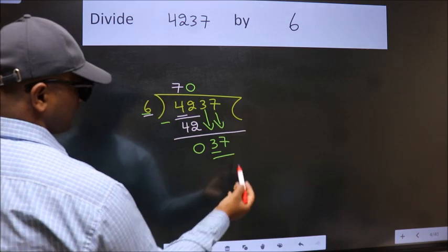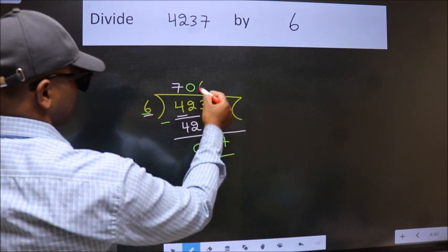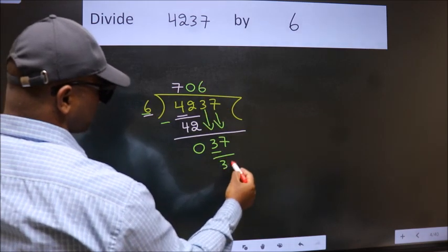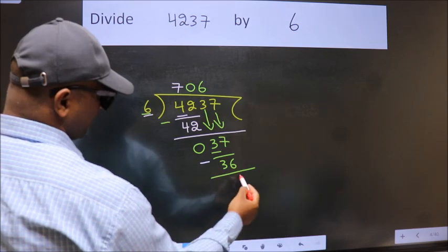So, 37. A number close to 37 in 6th table is 6 times 6 is 36. Now, we subtract. We get 1.